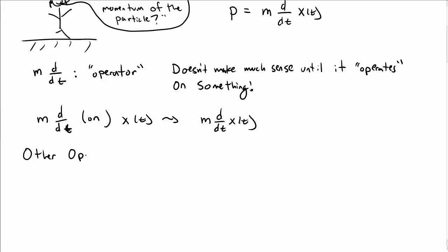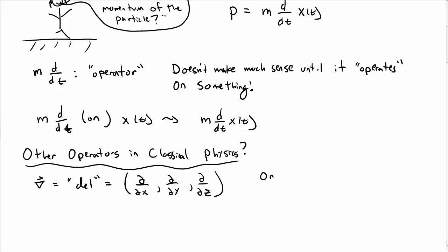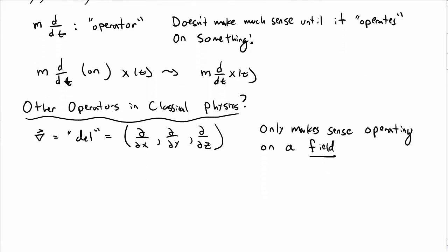There are a number of other operators in classical physics that we might work with. In particular, one that's common is the del operator, which is the partial derivative in the x, y, and z direction written as a vector. But again, this doesn't really make sense by itself. It only makes sense when it operates on something, and in this case, when it operates on a field.